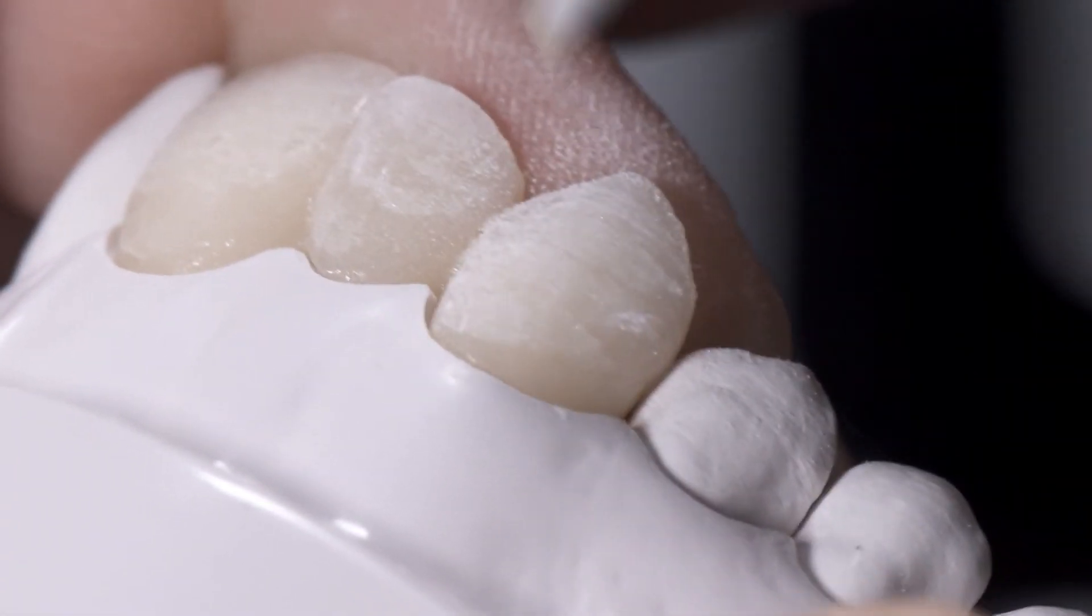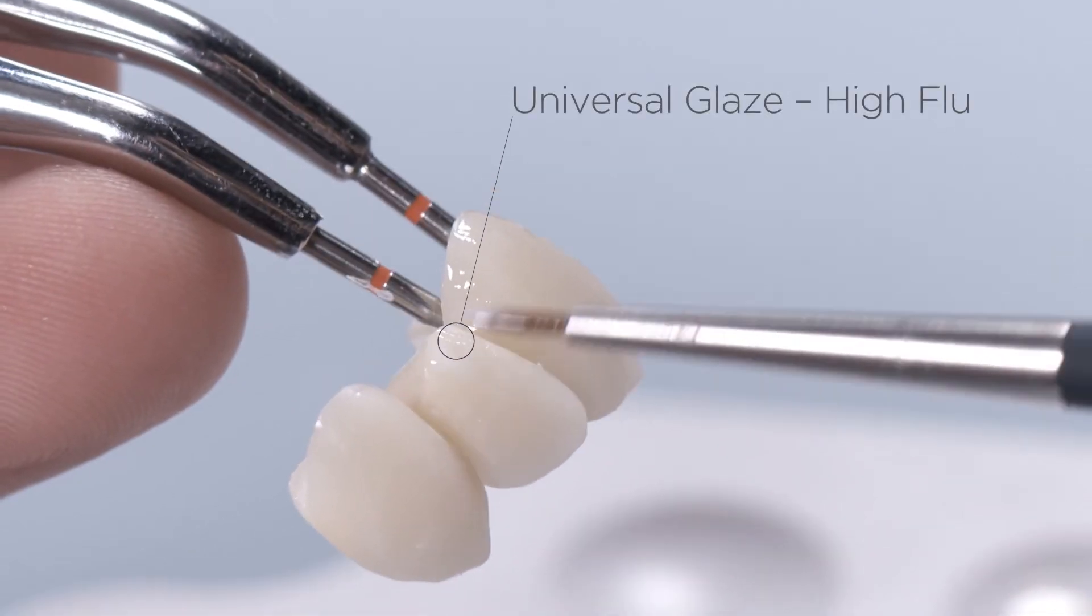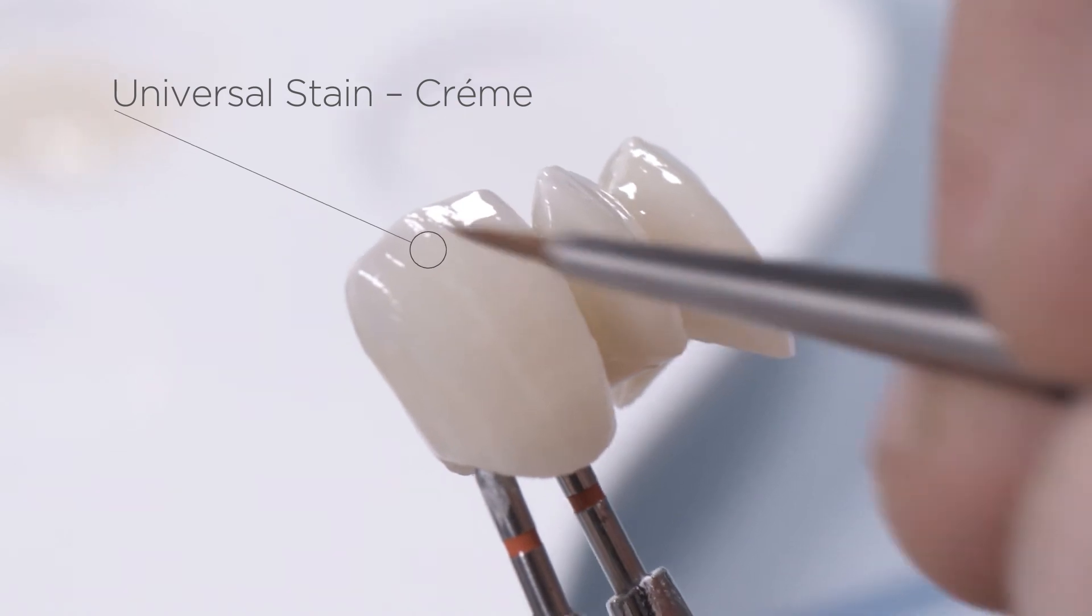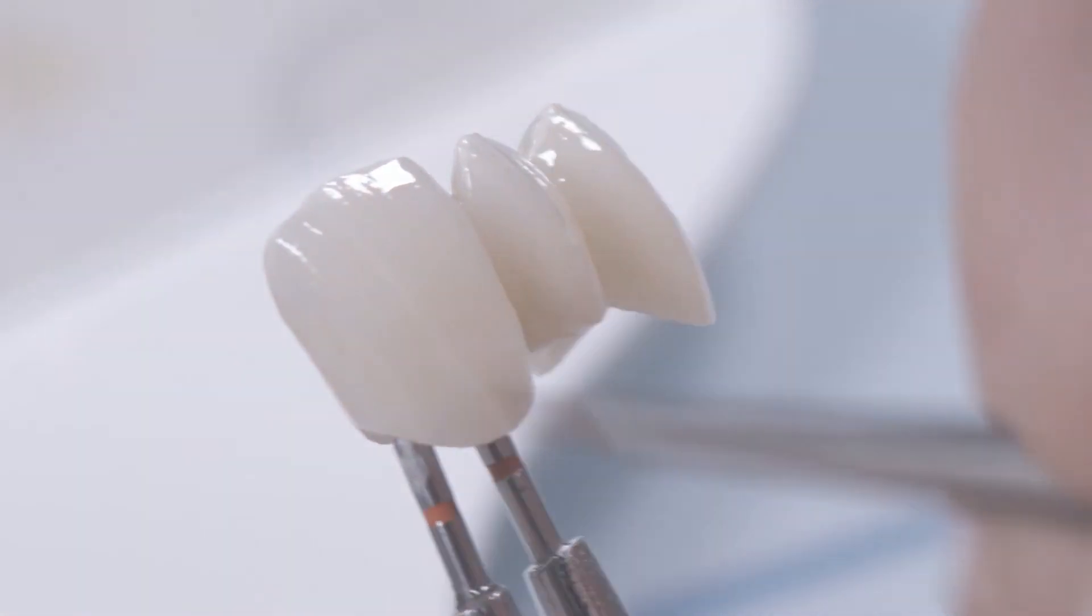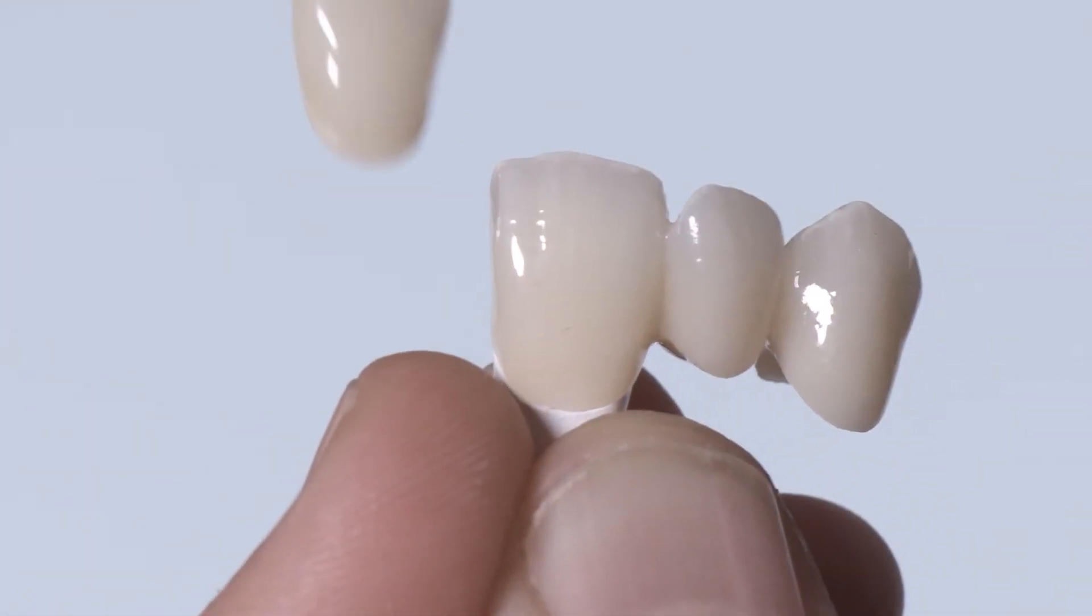The entire surface is glazed with High Flu Universal Overglaze, followed by adding delicate custom features in the incisal areas using Cream Universal Stain. The result, a perfect shade match. The opalescence of the incisal edge supports the natural appearance of the restoration.